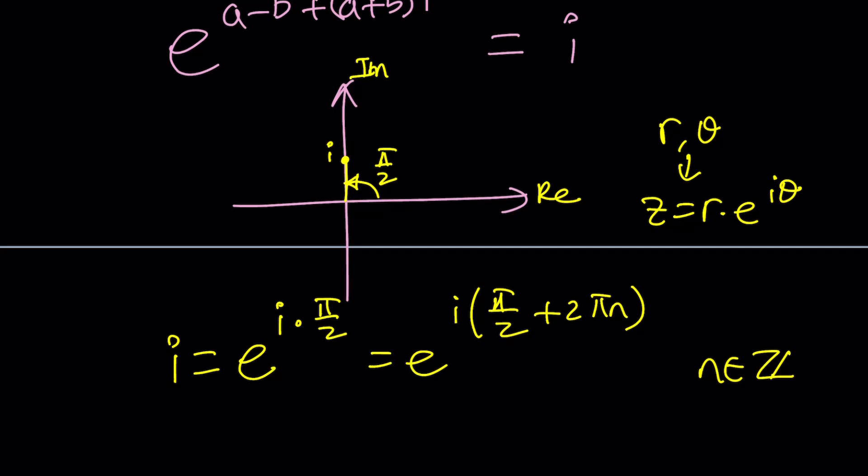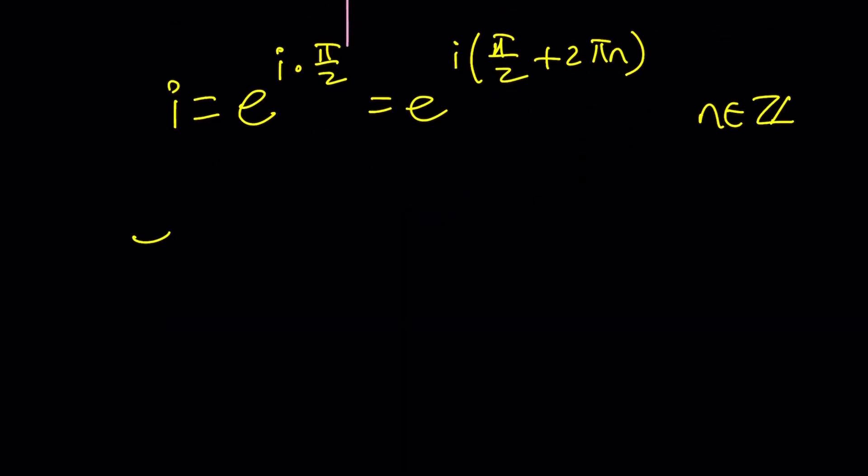By the way these are equal because they're both equal to i make sense. Okay cool cool now what am I going to do with this? Well we can kind of set these two things equal to each other e to the a minus b plus a plus b i equals e to the power i times pi over two plus two pi n and if you want a simple solution replace n with zero then you'll get something simpler.